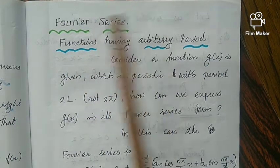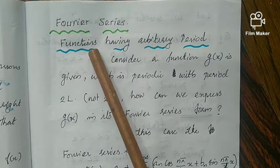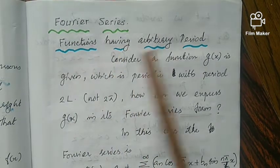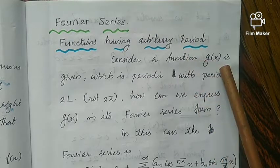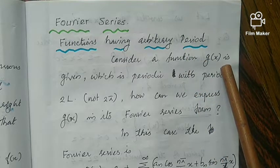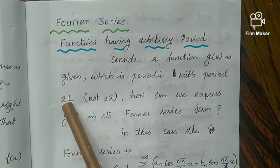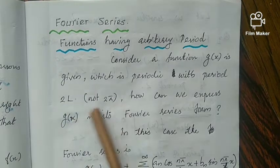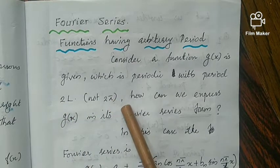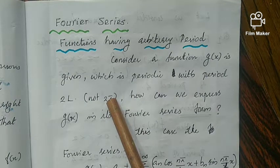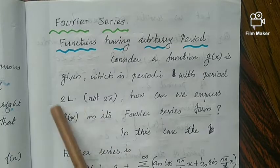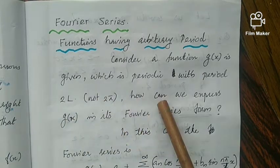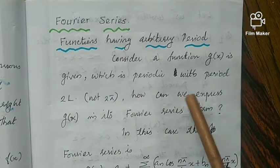In Fourier series, we are discussing functions having arbitrary periods. Consider a function g(x) which is of period 2L. Note that this is not 2π. In the 2π case, we know how to find the Fourier series, but here the period is not 2π, it is 2L. In that case, with a simple adjustment...